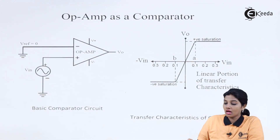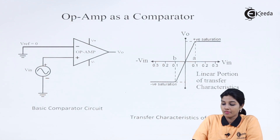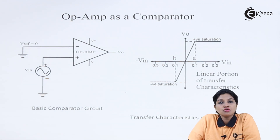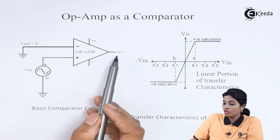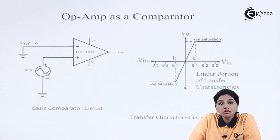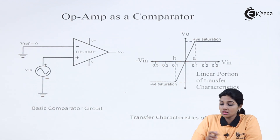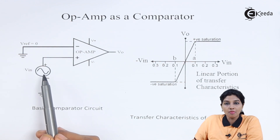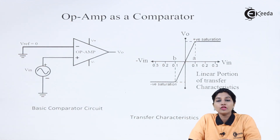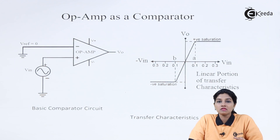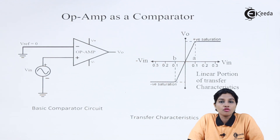In the diagram, we have two input signals applied to the inverting and non-inverting terminals of the Op Amp. The Op Amp is used in open loop configuration, meaning no feedback is provided from output to input. The Op Amp has two inputs and one output. The signal to be compared is given at one terminal of the Op Amp, and the known signal — known to the user — acts as another input, called the reference voltage or V-reference.